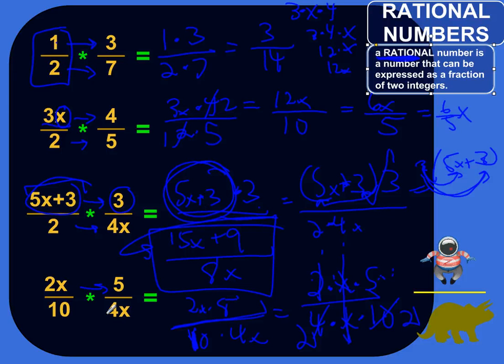So actually, everything up top canceled away or became 1s. So the top is 1, and then we've got 2 left, 2 times 2, which is 4. So this whole thing becomes simply 1 fourth.